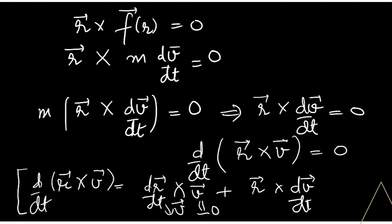So we get this term. We can rewrite this as R cross dV/dt as d/dt of R cross V. So we are having this expression d/dt(R cross V).